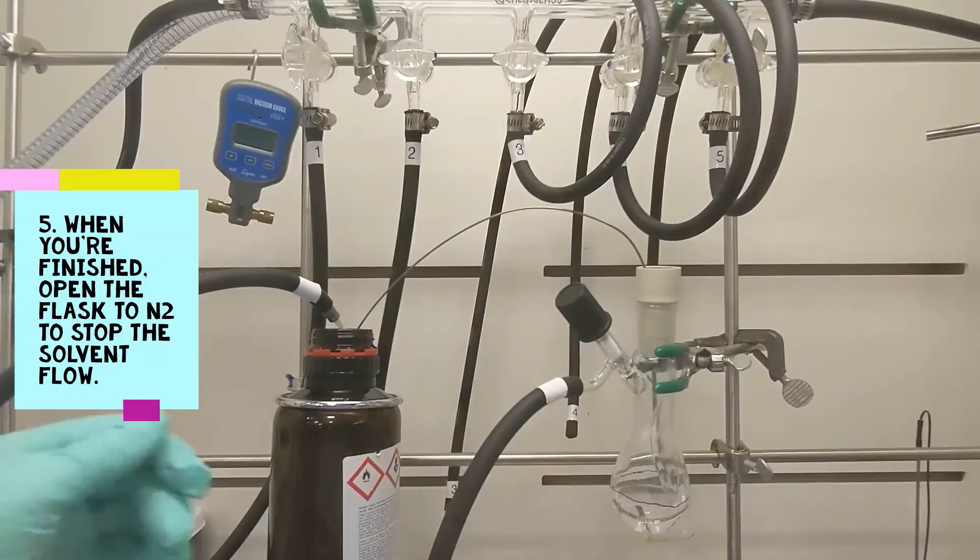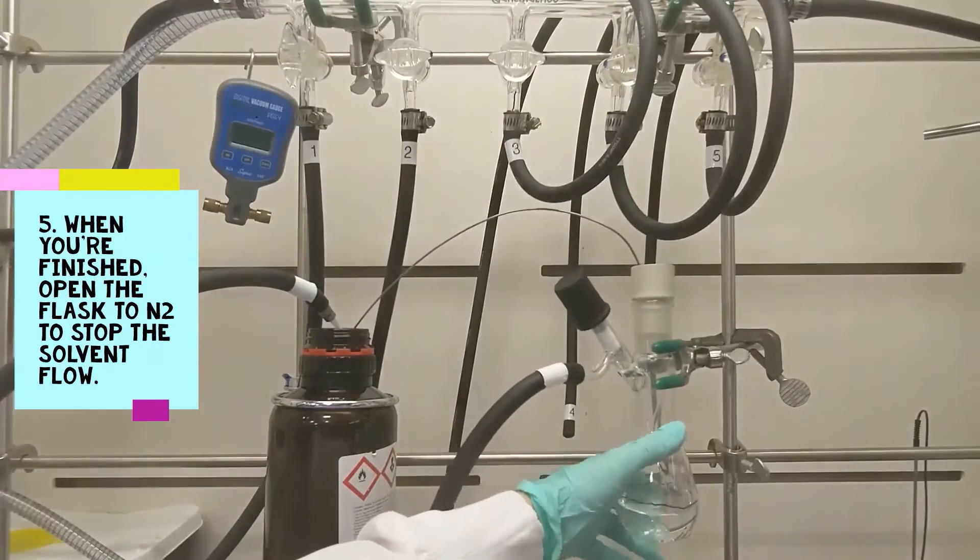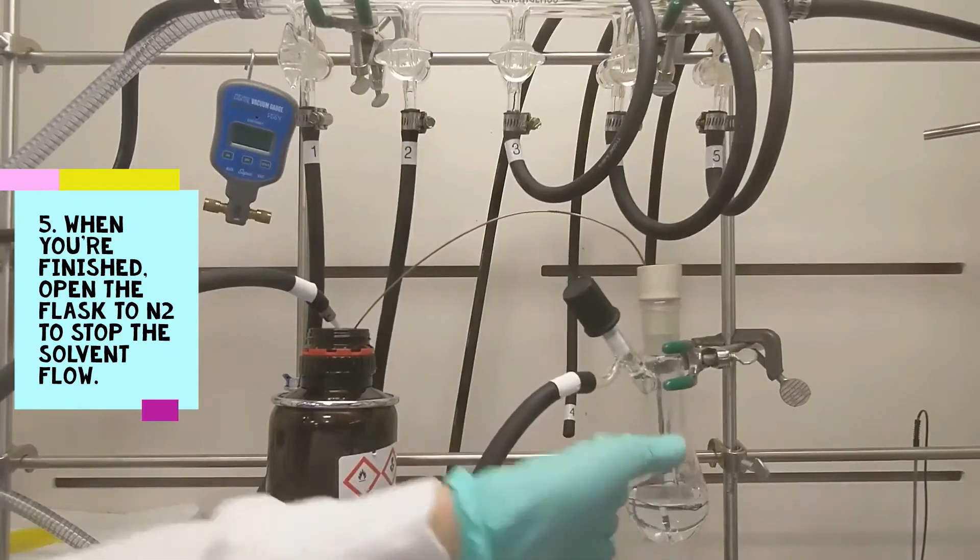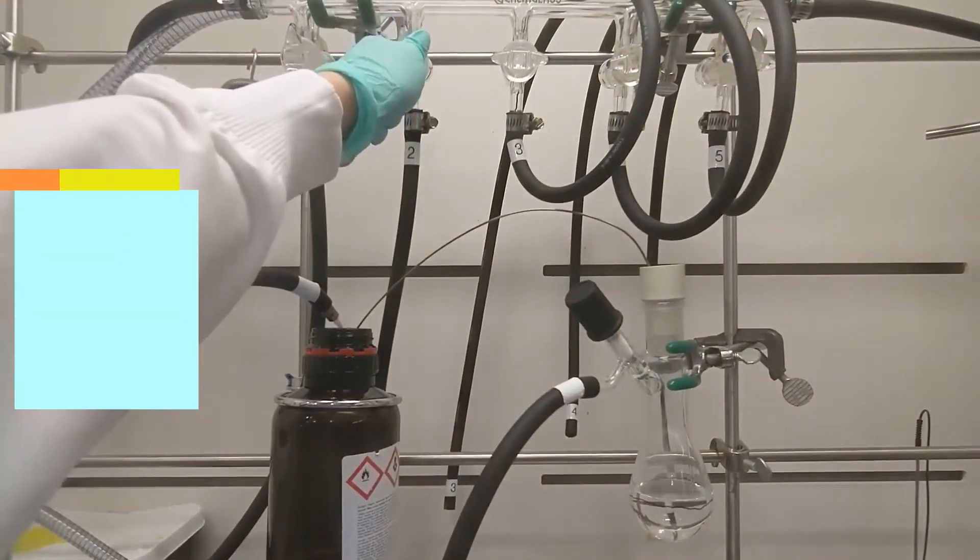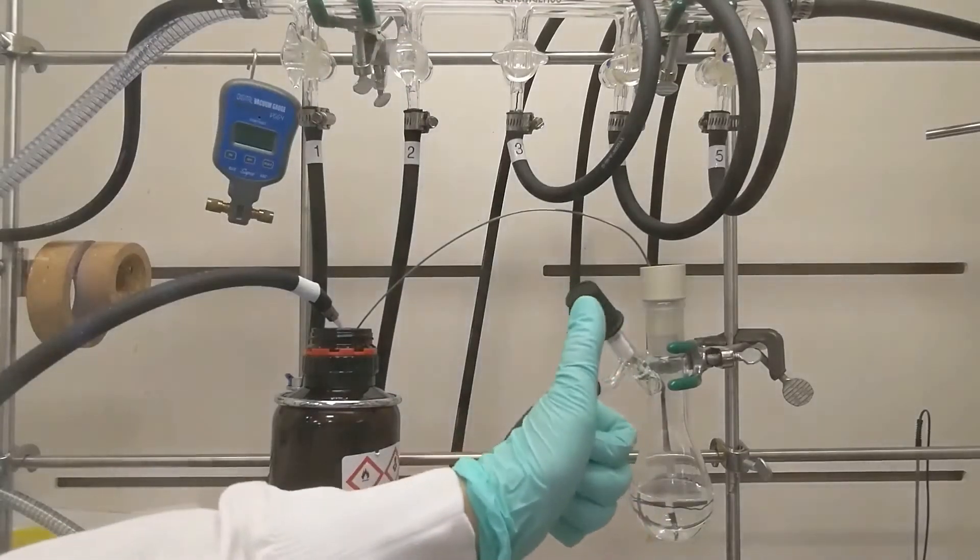Finally, step five, to stop solvent flow, open the flask to nitrogen to reintroduce positive pressure. This will rebalance the pressure across the system and stop liquid from flowing.